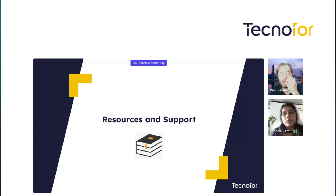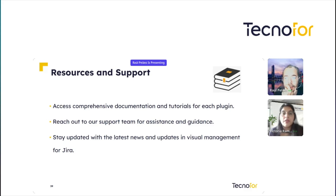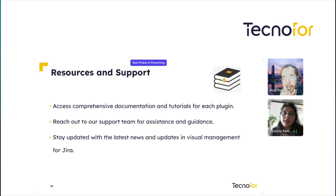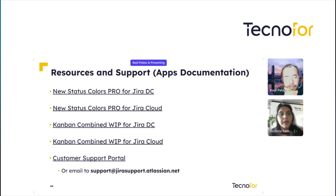Here we are also adding some resources and support information that you can find to work and improve your visual management — to access the documentation, to reach out to our support teams for assistance and guidance. Please don't hesitate to reach out if you need assistance and try to stay updated on the latest news about the plugins. We left here some links for the documentation for both Data Center and Cloud for New Status Colors and Kanban Combine WIP, and also the link to our customer support portal.